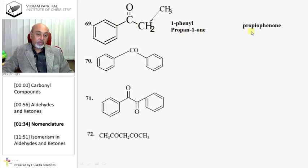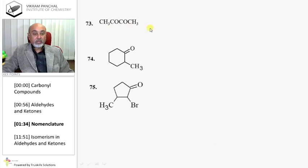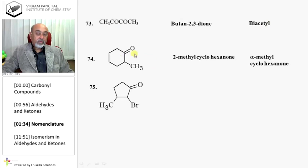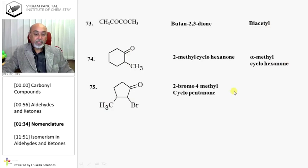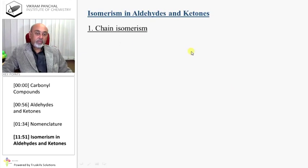Acetophenone, or acetylbenzene, or methylphenylketone. This has three carbons in the ketone: it is 1-phenylpropan-1-one. This is benzophenone, or diphenylketone. This one is diphenylglyoxal. Here we have two C=O groups, so pentane-2,4-dione, or acetylacetone. Butane-2,3-dione, or biacetyl. 2-Methylcyclohexanone, or alpha-methylcyclohexanone. 2-Bromo-4-methylcyclopentenone.